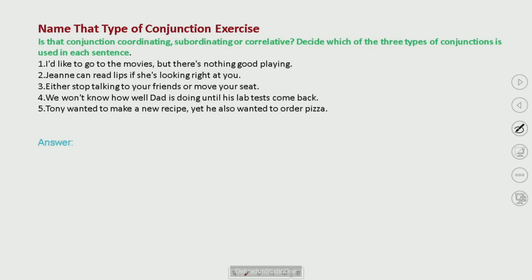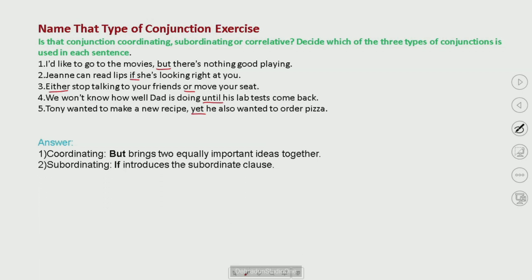Now here you need to identify the type of conjunction. Here the conjunction is 'but.' First underline which conjunction it is. The options are: if, either/or, until, yet. The first one we studied — coordinating conjunctions — which we learned through FANBOYS. The first one here is a coordinating conjunction. 'But' brings two equally important ideas together. The second is a subordinating conjunction: 'Janie can read lips if she is looking right at you.' Here the correlative conjunction 'either' is always followed by 'or.'